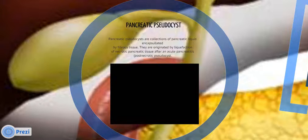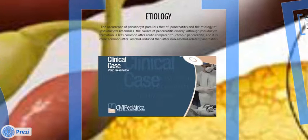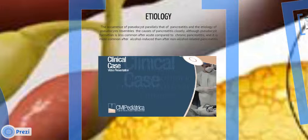Pancreatic cyst disease is a collection of pancreatic liquid encapsulated by fibrous tissue. The etiology of the disease resembles the causes of pancreatitis closely. Also, the disease formation is less common after acute compared to chronic pancreatitis.